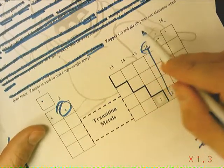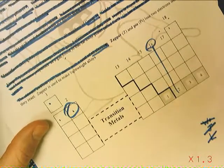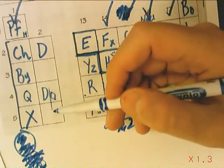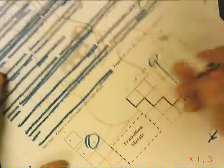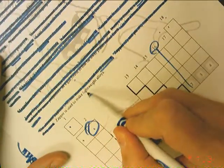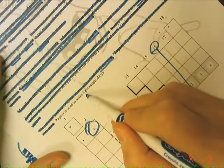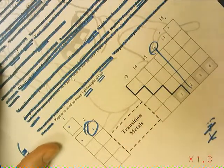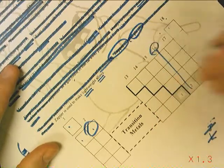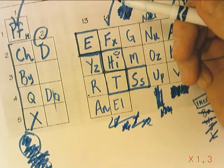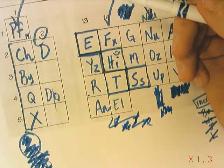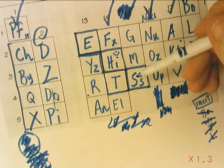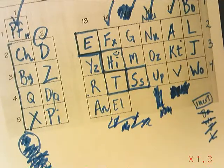ZAPPER and PI lose two electrons when they react. That must mean they each have two electrons to lose. That means they go in here, group two. ZAPPER is used to make lightweight alloys. I noticed this word lightweight. If ZAPPER and PI belong in here and ZAPPER is used to make lightweight alloys, then ZAPPER is lighter. It must go there. PI goes there. And that 49 one, AN, would land here. So there's your Alien Periodic Table.